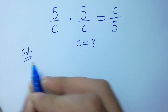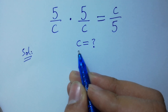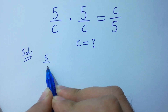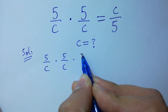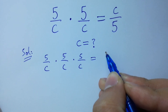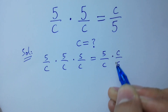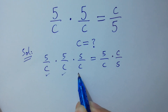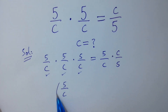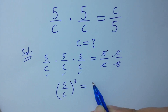To solve this, first of all, multiply by 5/c on both sides: (5/c) × (5/c) × (5/c) × (5/c) equals (5/c) × (c/5). Since 5/c is repeated 3 times, it will be (5/c)³ equals 1, as 5 and 5, and c and c, will be cancelled. We get 1.